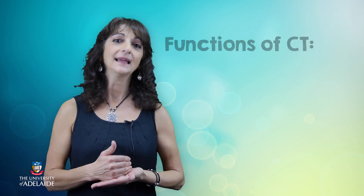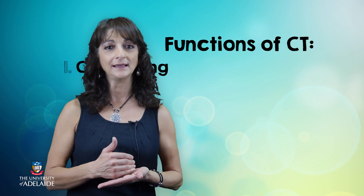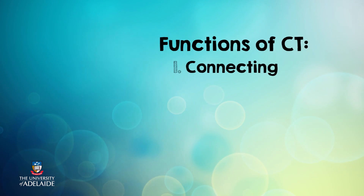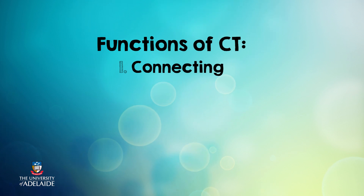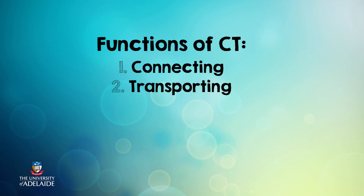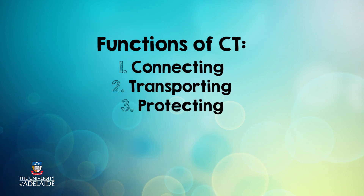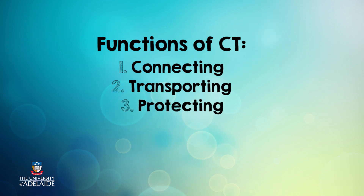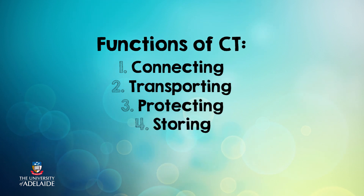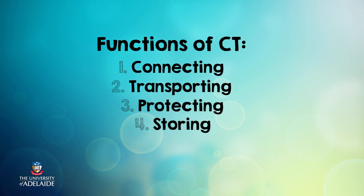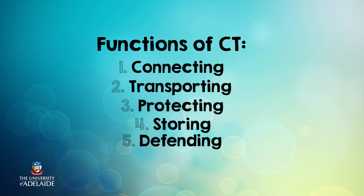Connective tissue is responsible for connecting one tissue to another, like tendon connecting a muscle to bone; transporting fluids and dissolved materials, like blood; protecting and supporting delicate organs such as our heart and kidneys via connective tissue sheets; storing energy reserves in the form of triglycerides in fatty connective tissue, otherwise known as adipose tissue; and defending the body from invading organisms, which is the role of lymph.